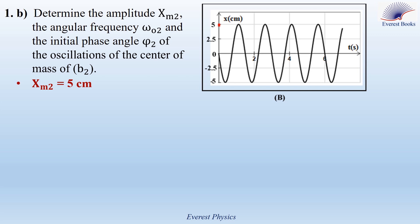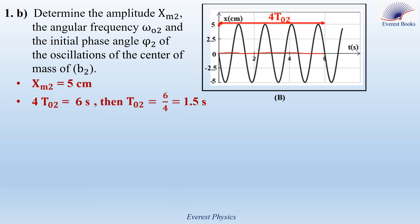Now let's determine the natural period. As you see, there are 4 oscillations extending over 6 seconds. So 4·T_02 equals 6 seconds, giving a natural period of 6/4 equal to 1.5 seconds. The natural angular frequency omega_02 equals 2π over T_02, which is 2π over 1.5, giving 4.19 radians per second.